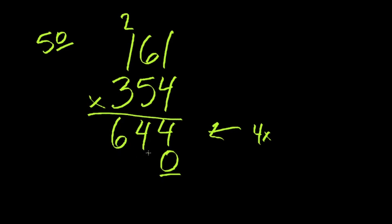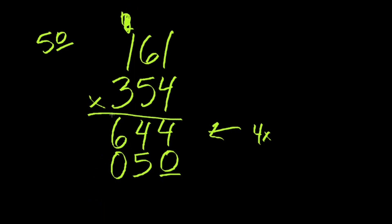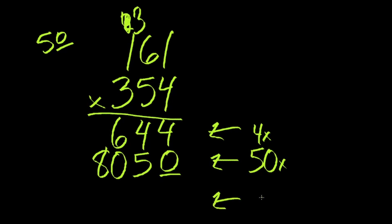Five times one is five. Five times six is 30 — I put the three up here because there's another number to multiply. If I put that three right here, I'd have to add another number to it with five times one, and it gets confusing and throws off my organization. Five times one is five, plus three is eight, and we're done with that. So this row shows us 50 times — not five times, but 50 — because it's in that place. So we need this last row to show us 300 times, because this stands for 300. Not three ones, not three tens, but 300.